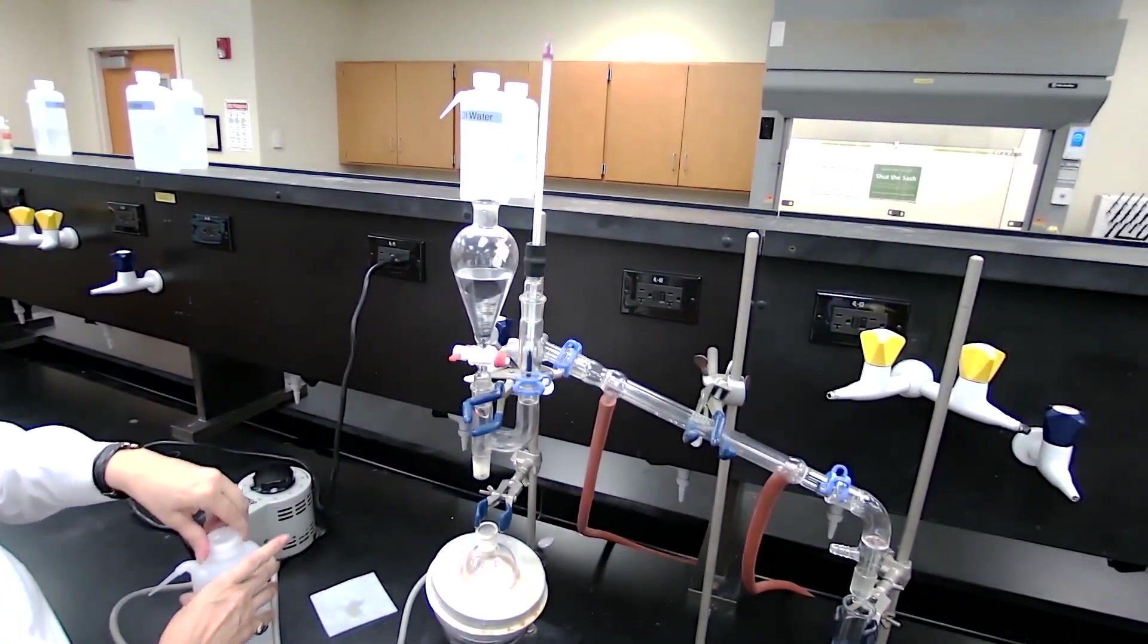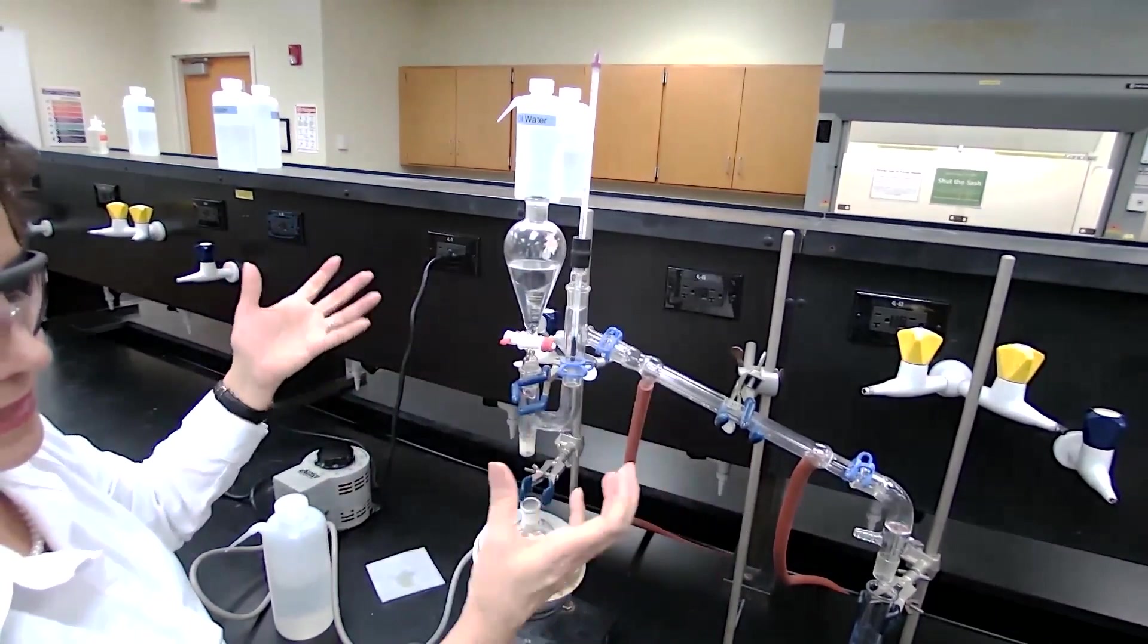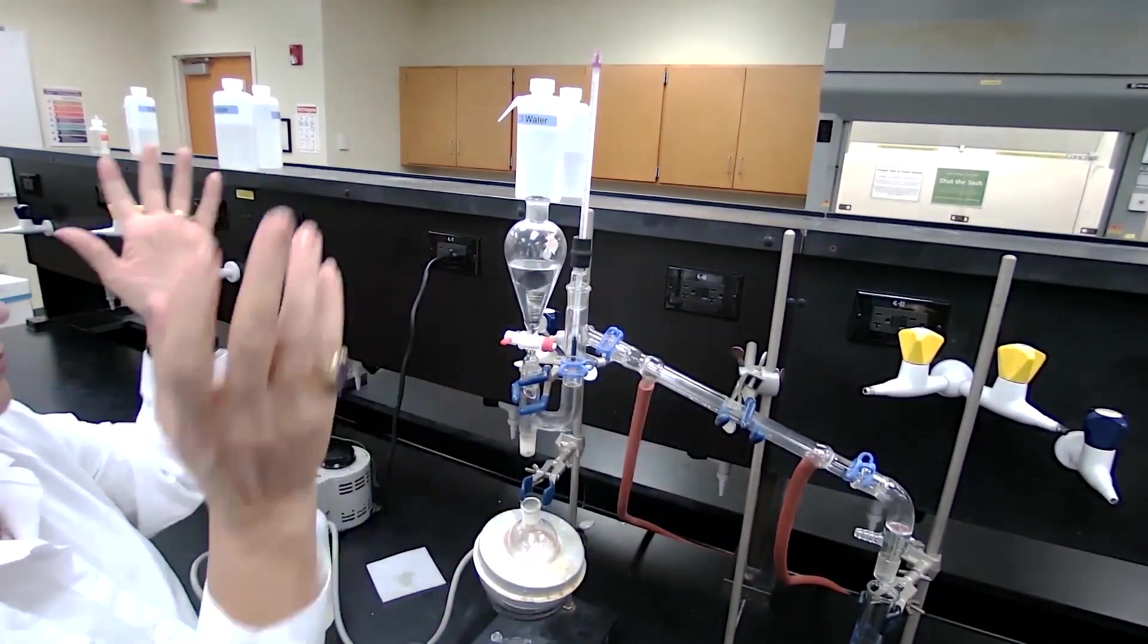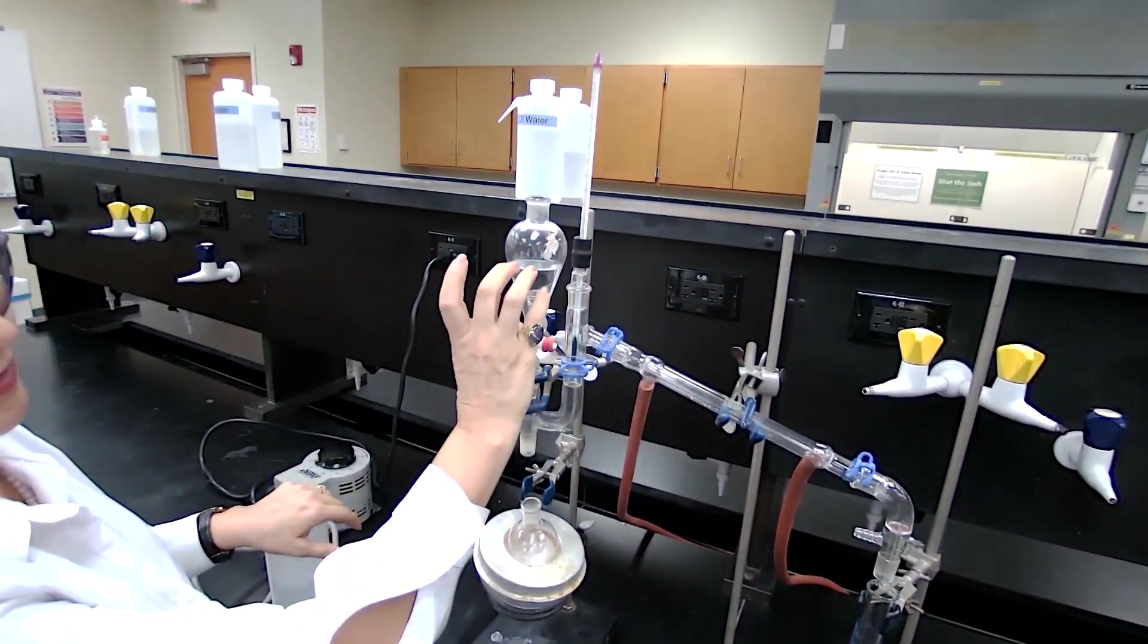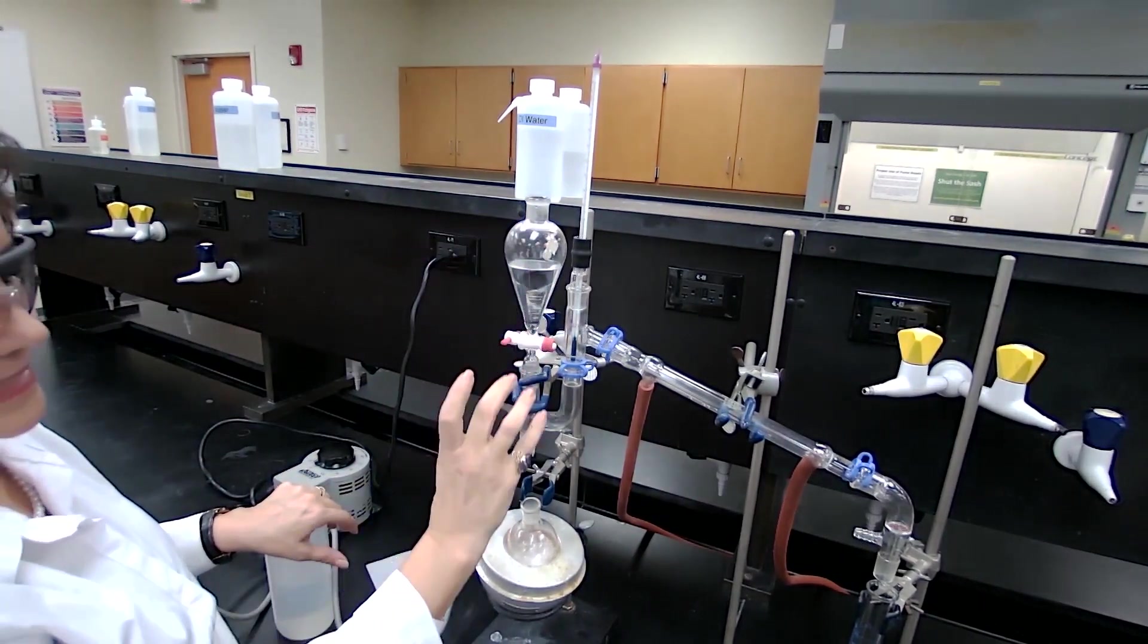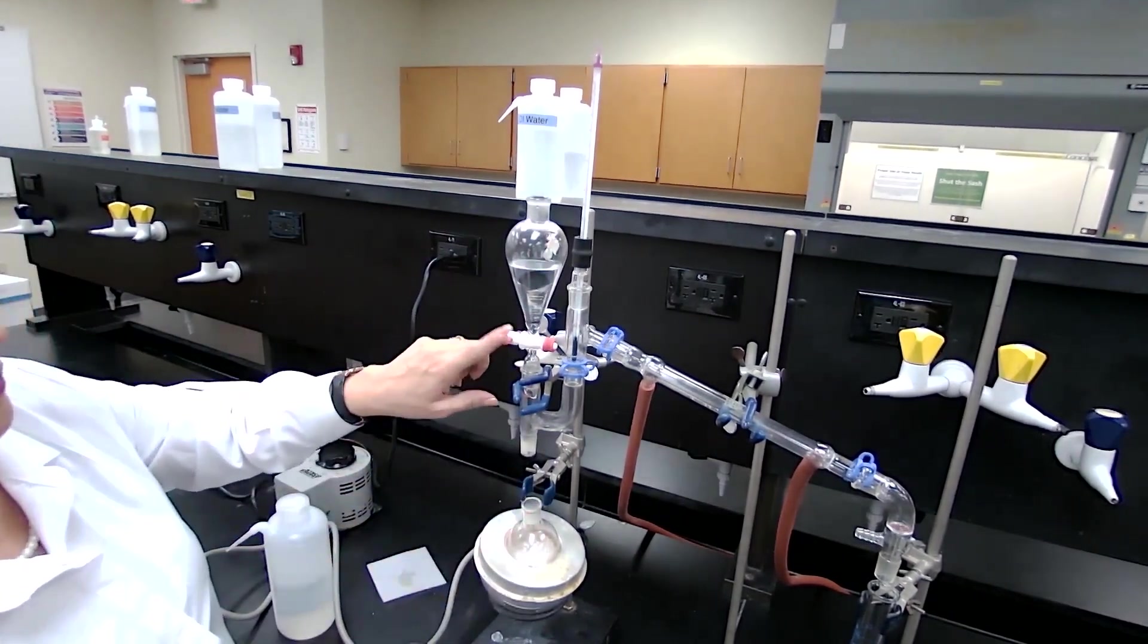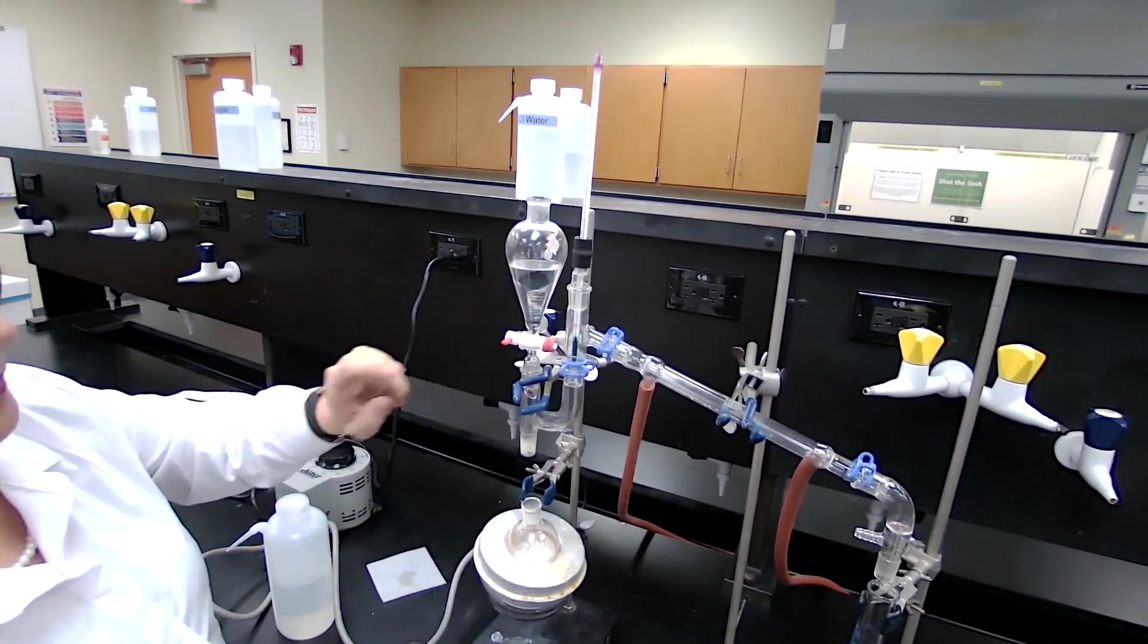Simply I would just open the stopcock here and get more water into the boiling flask. Because during distillation, I cannot separate anything. Everything is too hot. I don't want to lose the vapor, so I'm going to use this water reservoir. In case I need to add water, I would just open the stopcock.